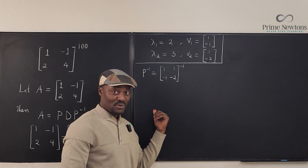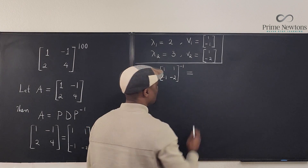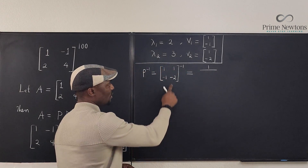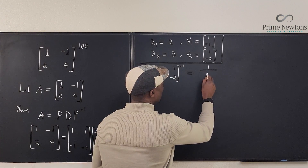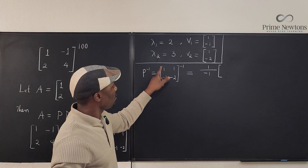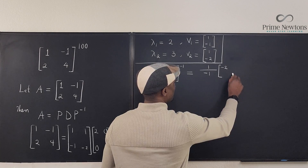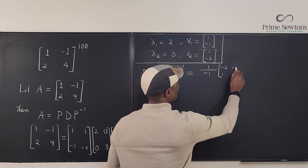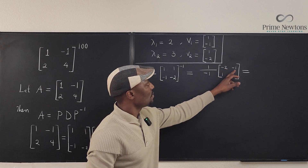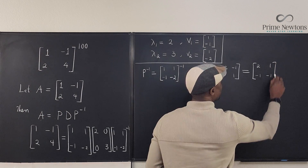Let's quickly compute P⁻¹, because we'll need it for the final calculation. Using the 2×2 inverse shortcut: it's one over the determinant of the matrix times the adjoint. The determinant is -1, so we get (-1) times the adjoint, which involves switching the diagonal entries and changing the signs of the off-diagonal entries. This gives us P⁻¹ = [2, 1; -1, -1].